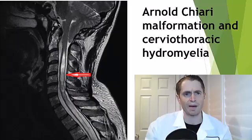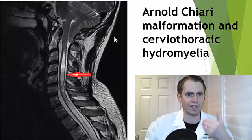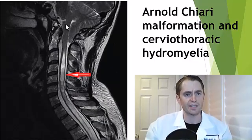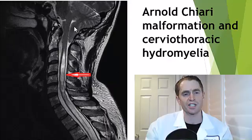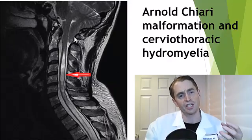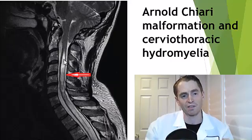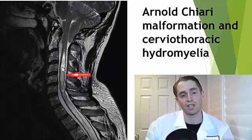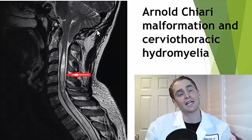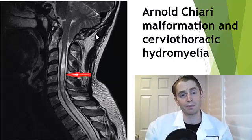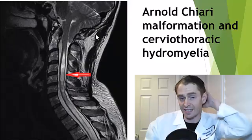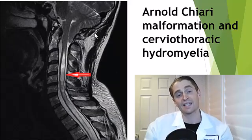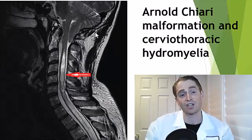This is Arnold Chiari malformation. You're looking at sagittal images. This is the spinal cord, and here's the cerebellum herniating through the foramen magnum. This disrupts flow of cerebrospinal fluid, causing the central canal to enlarge and push on surrounding structures. This image would often be associated with symptoms like headaches in the back of the head, dizziness, and loss of pain and temperature sensation in the neck, arms, and torso.